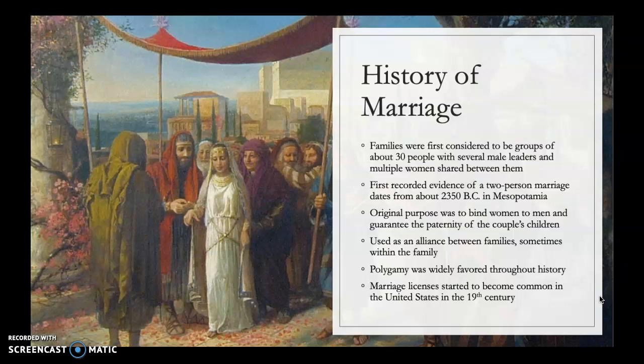Polygamy is where a man marries two or more women, as well as polyandry, which is when a woman is married to two or more men. Monogamy started to come about because of the Catholic Church and became common in Western marriages between the 6th and 9th century. Marriage licenses started to become common in the United States in the 19th century.